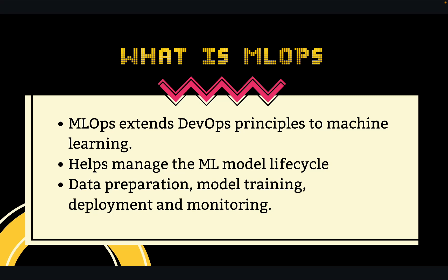Now let's look at MLOps. MLOps came into picture because machine learning systems have their own complex workflows. MLOps extends DevOps principles to machine learning — it helps you manage the machine learning model lifecycle. That lifecycle includes data preparation, model training, and then deployment and monitoring. DevOps itself struggles to address this complex pipeline, so that's where MLOps kicks in — machine learning plus operations.